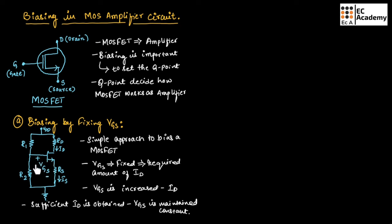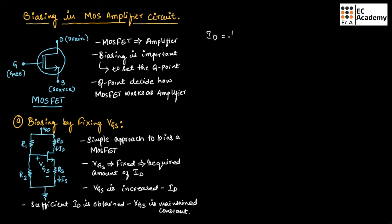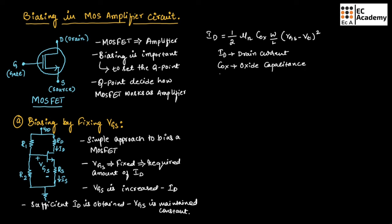Initially, VGS is increased so that the required amount of ID is obtained. Once sufficient drain current is obtained, VGS is kept constant. We use a voltage divider circuit to fix VGS. The drain current ID can be given as: ID = (1/2) × μN × COX × (W/L) × (VGS − VT)², where ID is the drain current, COX is the oxide capacitance, VGS is the voltage between gate and source, VT is the threshold voltage, and W/L is the transistor aspect ratio — that is, width divided by length.